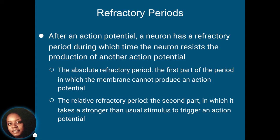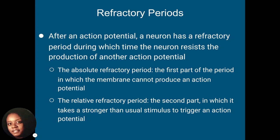When an action potential does not occur, the neuron is going through a refractory period — a time when a neuron resists producing another action potential. I always tell students to think of a toilet flushing: when you flush it, it flushes with the same intensity each time, but if you keep pressing the button there's a refractory period where it won't flush again because it needs to fill back up with water. The same thing takes place in a neuron — it resists producing another action potential because it has to wait.